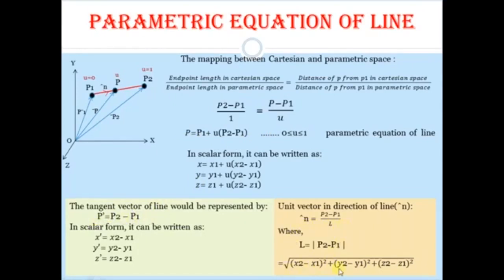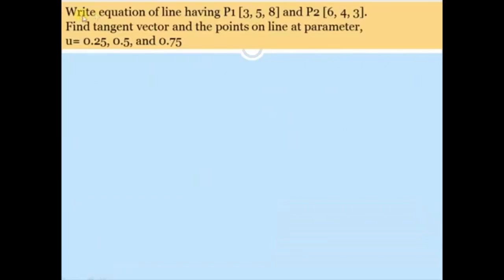Using this formulation we can find the parametric equation, coordinates of any point P on the line, the tangent vector, unit vector, and length of the line. Now let's solve a numerical example. We need to write the equation of a line with endpoints P1 = (3, 5, 8) and P2 = (6, 4, 3), and find the tangent vector and points on the line at u = 0.25, 0.5, and 0.75.